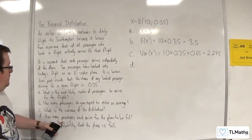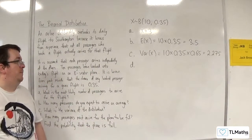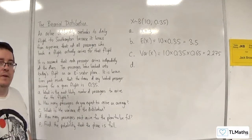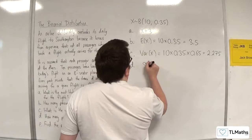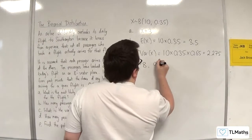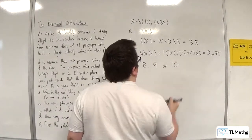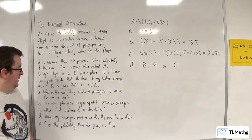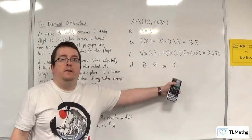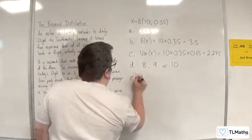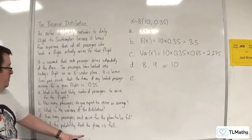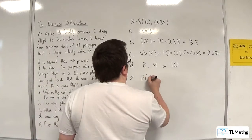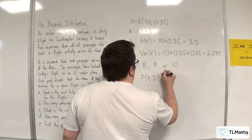Part D: how many passengers must arrive for the plane to be full? It's an 8-seater plane, so you need either 8, 9, or 10 passengers to turn up for the plane to be full. Part E: find the probability that the plane is full. That would be the probability of X being greater than or equal to 8.